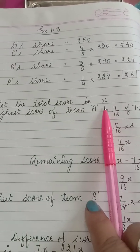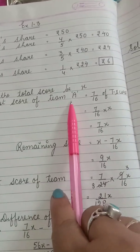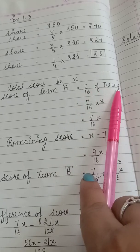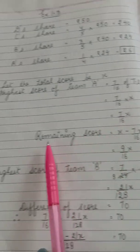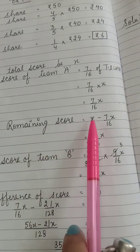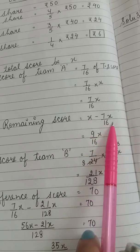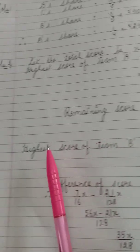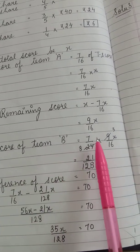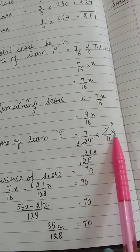Let the total score be X. Highest score of team A is 7 by 16 of the total score, so it's 7 by 16 X. Let's find the remaining score. Total score minus the score of team A, that's 9 by 16 X. Highest score of team B is 7 by 24 of remaining score, which is 21 upon 128 X.